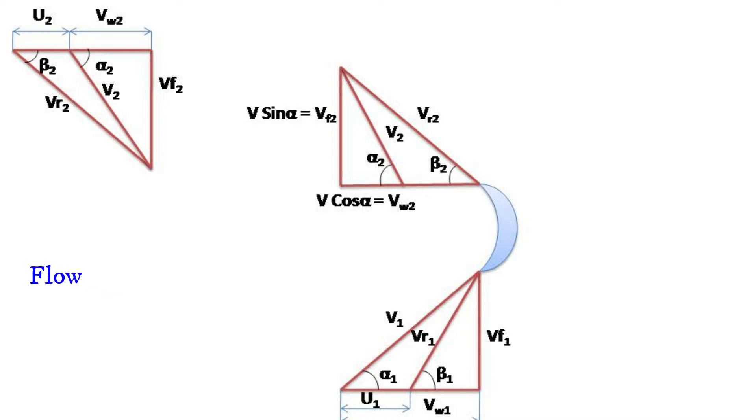And the second component is vertical component v·sin(α), which is also called as flow velocity vf2 at the outlet. U2 is shown between v2 and vr2.